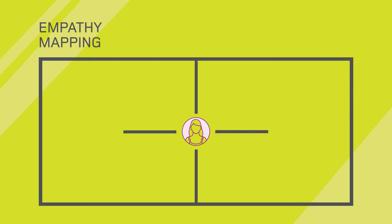And now finally you can move on to the empathy map. Empathy mapping explores the types of things learners are saying and doing in relation to the problem statement. From that we try to empathize with them by imagining what they might be thinking or feeling when they say or do these things.